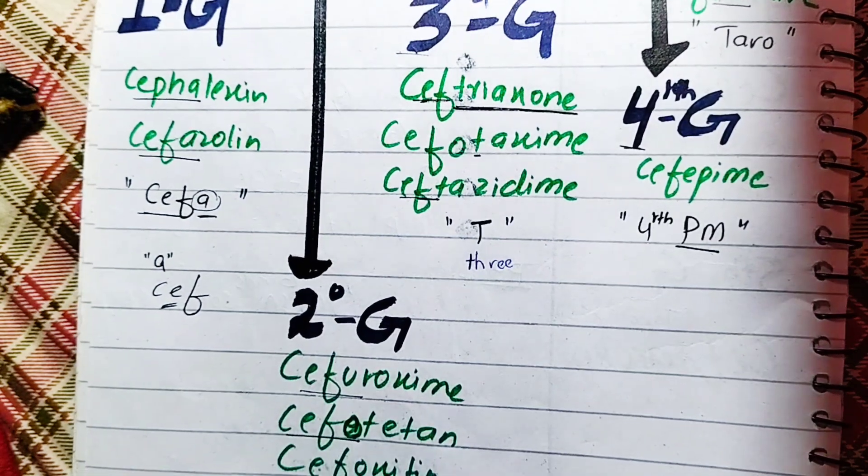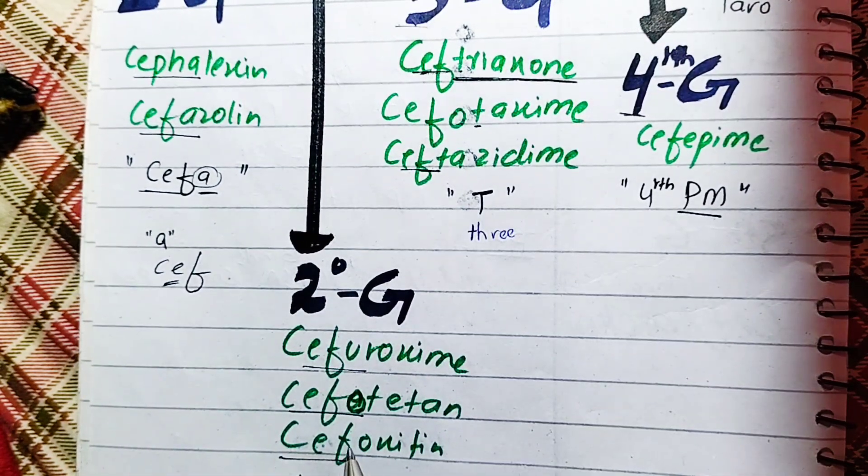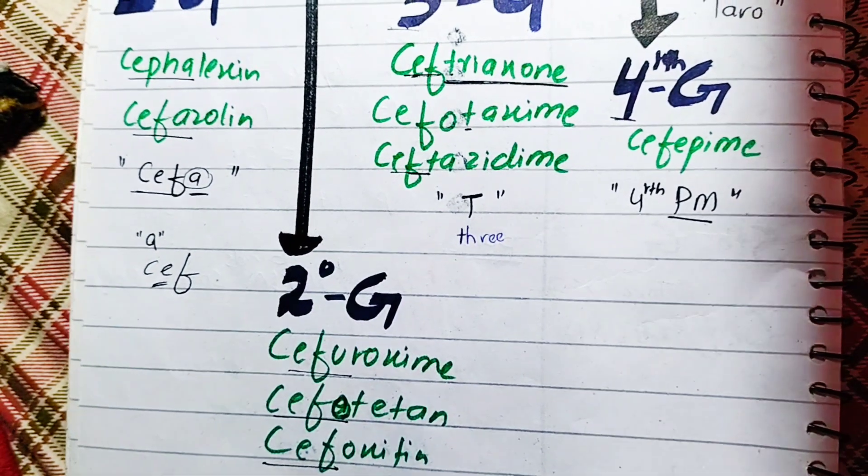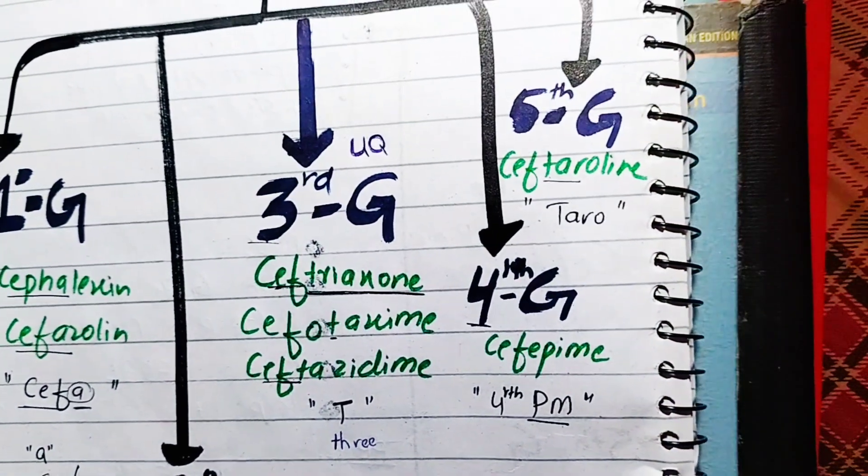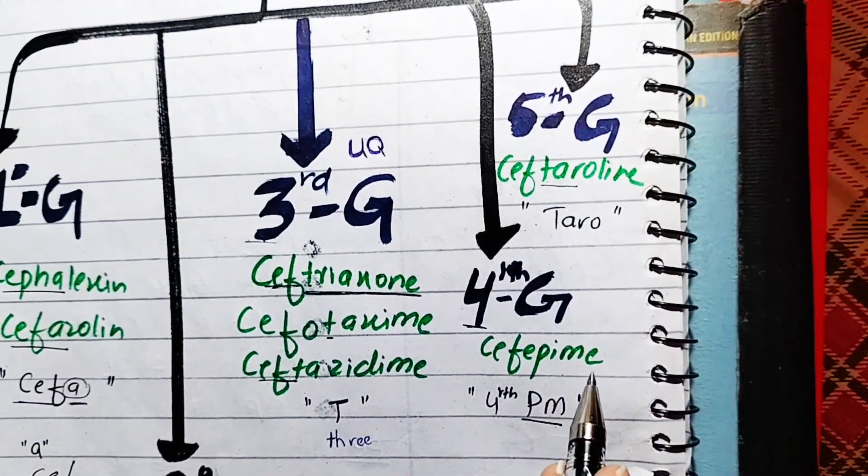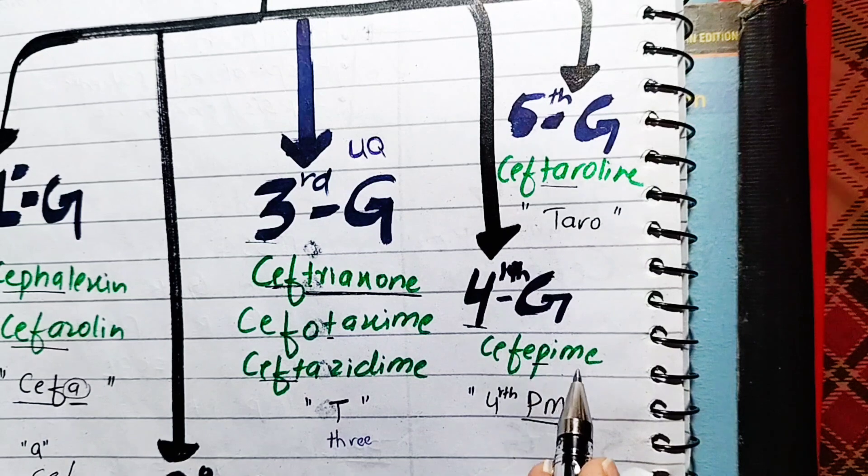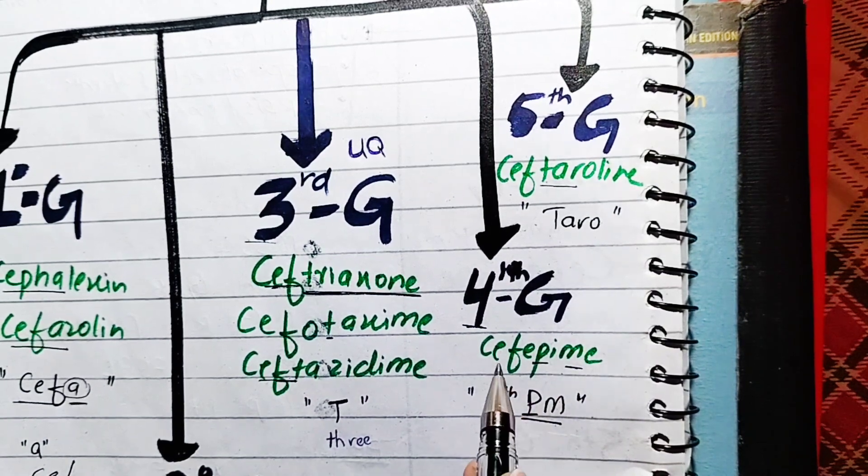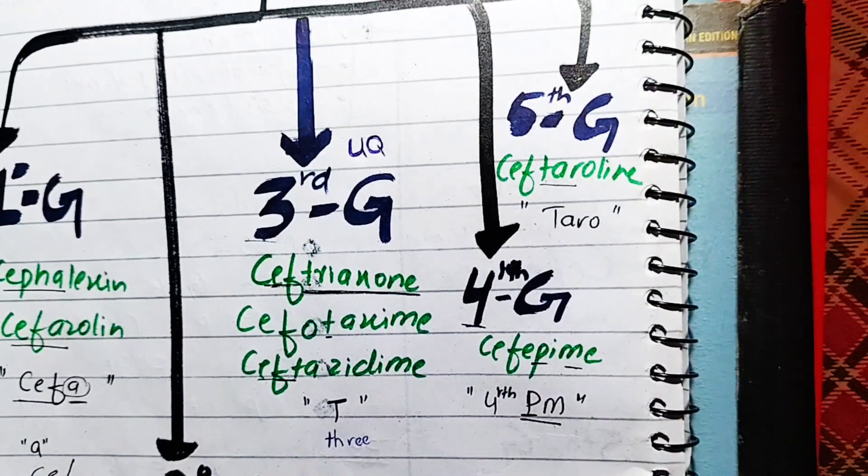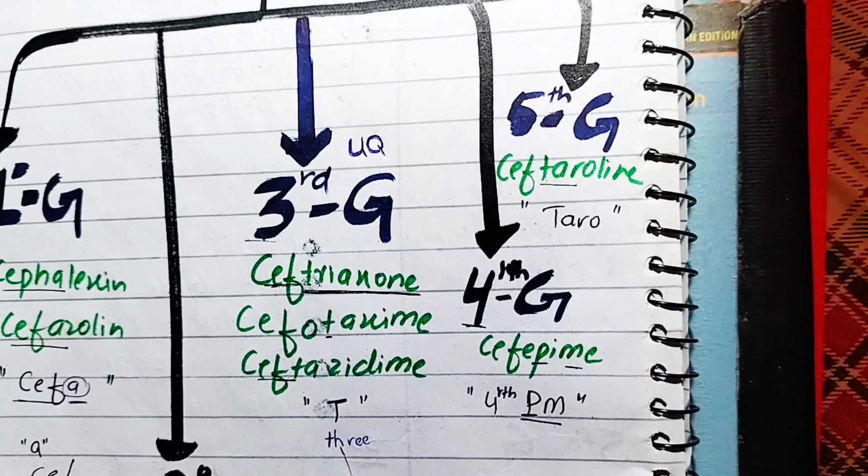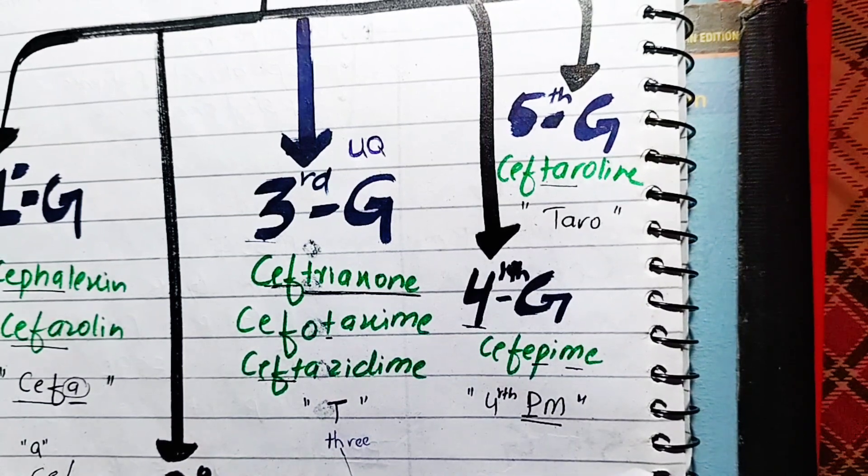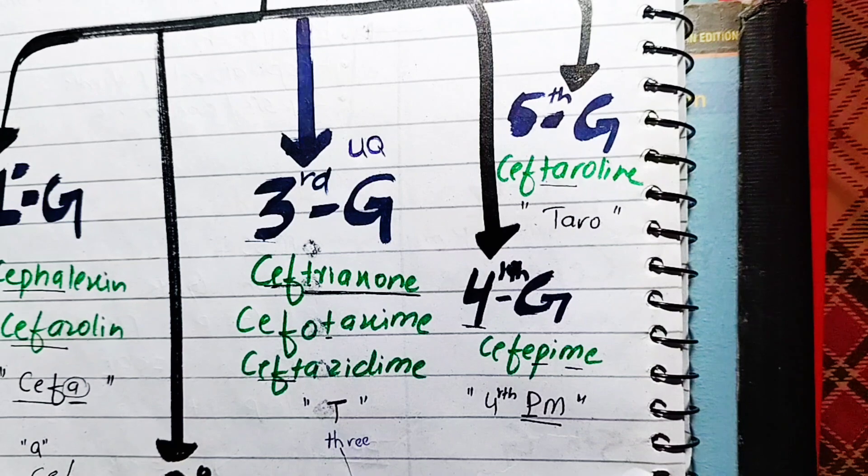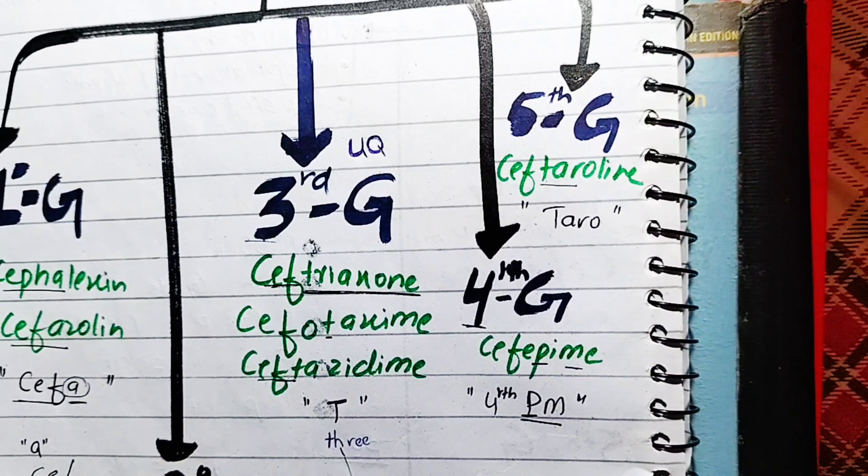Then you will talk about CFT. The CFT is the fourth generation. After the fourth generation, I will talk about the Cefepime. And 5 months ago, this is the Ceftaroline. So this is our classification.